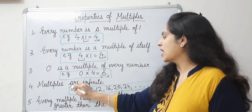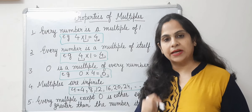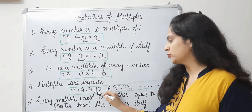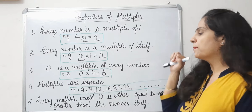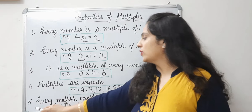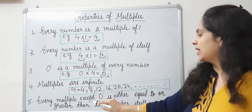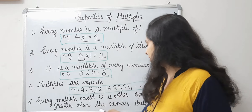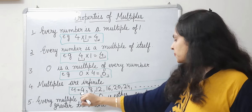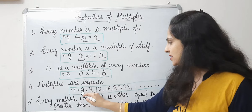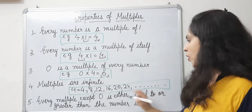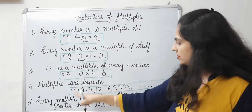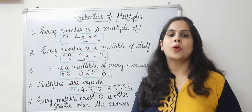The fourth property is that multiples are infinite. We will write the multiples of 4 starting from the non-zero multiple: 4, 8, 12, 16 — and so on. We can write infinite multiples of any number. The last property is that every non-zero multiple is either equal to or greater than the number itself. The smallest non-zero multiple equals the number, and the remaining ones are greater. These are the 5 properties of multiples.